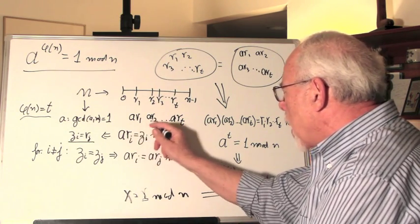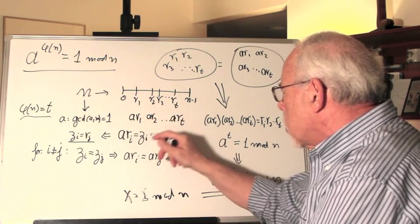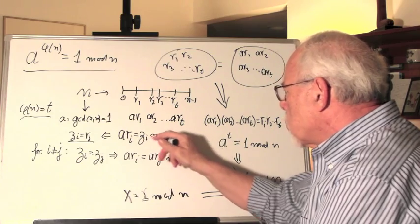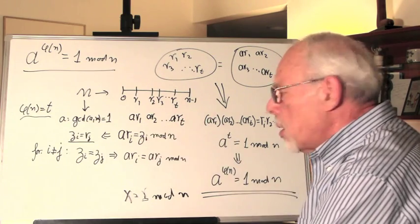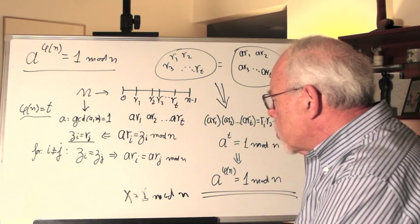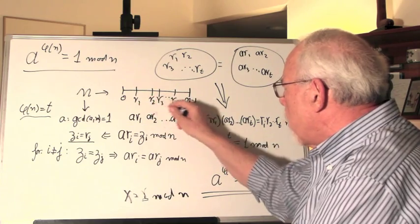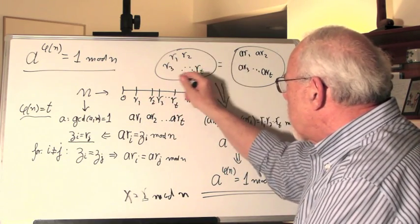And we ask ourselves, what is the value of one of those, a times ri, where i runs from 1 to t, mod n? The result is some zi.